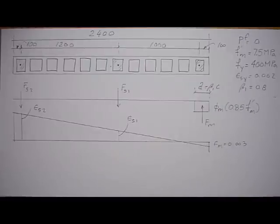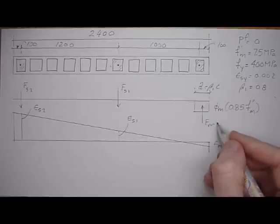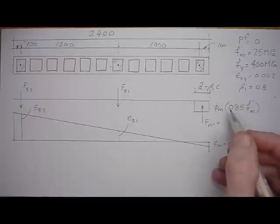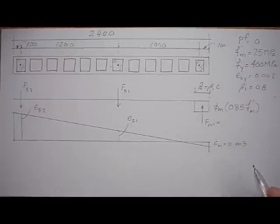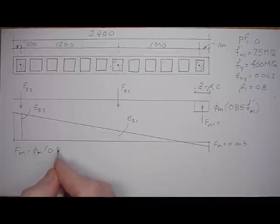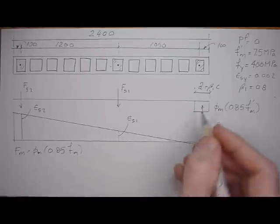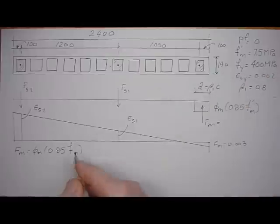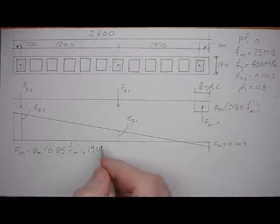So let's start with balancing the forces in the section. The force in the masonry Fm is equal to φm times 0.85 f'm times the width, which is 190 mm, times 'a', which is an unknown.